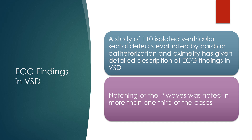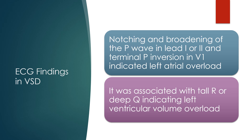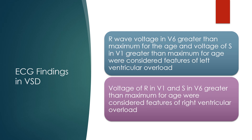A study of 110 isolated ventricular septal defects evaluated by cardiac catheterization and oximetry provided a detailed description of ECG findings in VSDs. Notching of the P waves was noted in more than one third of cases. Notching and broadening of the P wave in lead I or II and terminal P inversion in V1 indicated left atrial overload. This was associated with tall R or deep Q waves indicating left ventricular volume overload. R wave voltage in V6 greater than the maximum for age, and S voltage in V1 greater than maximum for age, were features of left ventricular overload. Voltage of R in V1 and S in V6 greater than maximum for age were features of right ventricular overload.